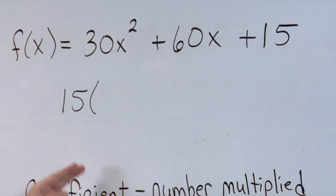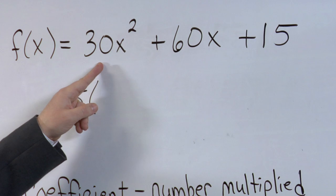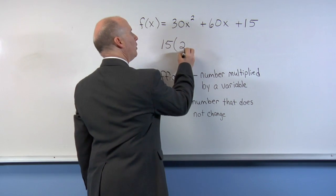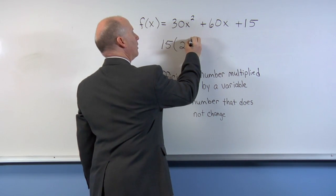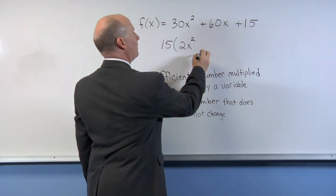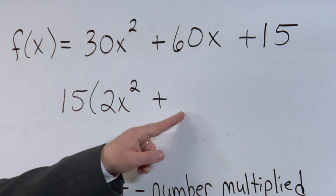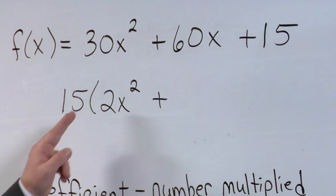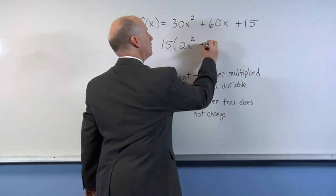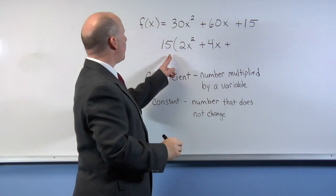So if I factor out 15, 15 times what equals 30? Well, that would be 2. 15 times 2 is 30. And we have the x squared, which cannot be factored by 15. Next, 15 times what equals 60? Well, 15 times 4 is 60.